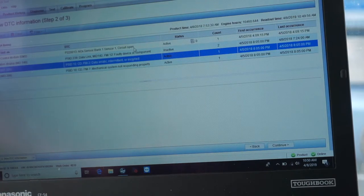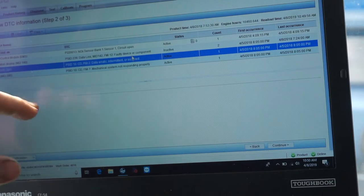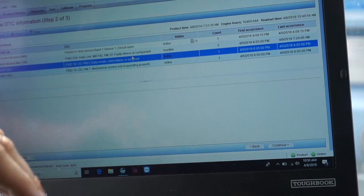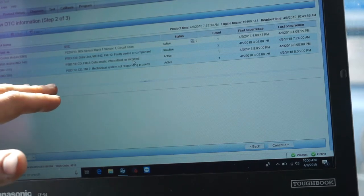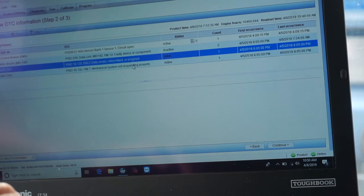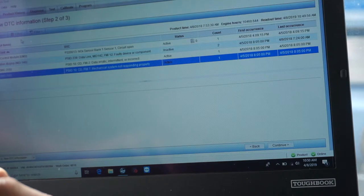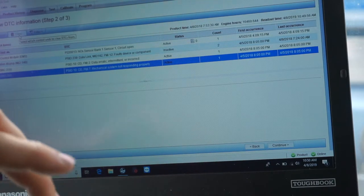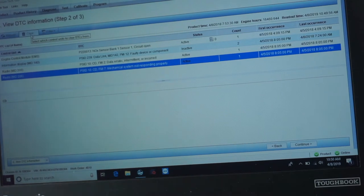It becomes a pain and eventually goes into derate and you can't do anything. Here it's saying NOx sensor bank one circuit's open, which could be just a connector. Data link, that's an old code. Data erratic, intermittent or incorrect, and then mechanical system not operating properly. I'm going to go ahead and clear these out because even with the computer being set up, I'm not able to do a forced regen with it still showing codes.